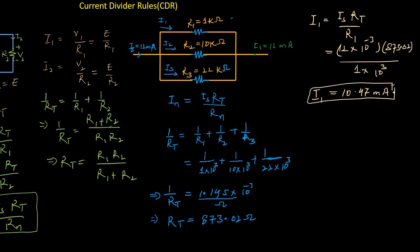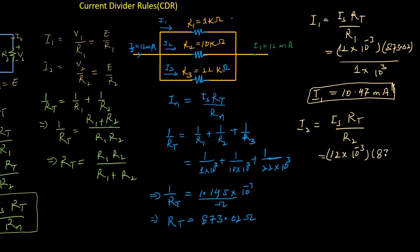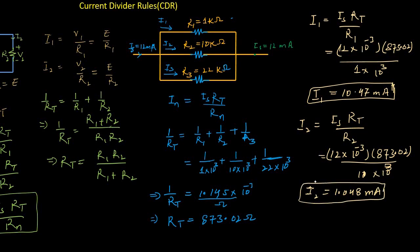So 10.47 mA of current is flowing through the first resistor. To find the current through the second resistor: I2 equals Is times Rt divided by R2. With Is equal to 12 mA, Rt equal to 873.02 Ω, and R2 equal to 10 kΩ, the current through the second resistor equals 1.048 mA.